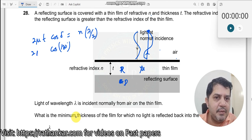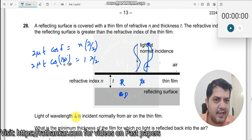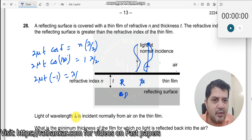This is 2 mu times T. T is thickness, we do not know this. This is n equals 1 into lambda by 2. Let us substitute all the values: 2 mu T times cos 180, which is minus 1, equals lambda by 2.